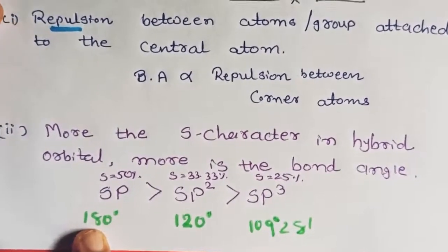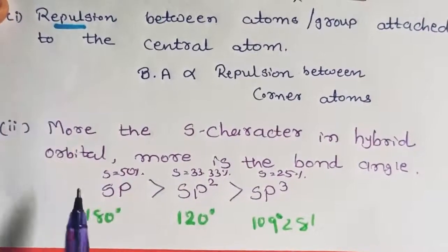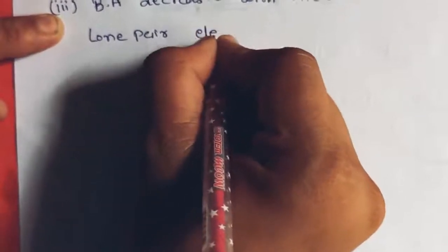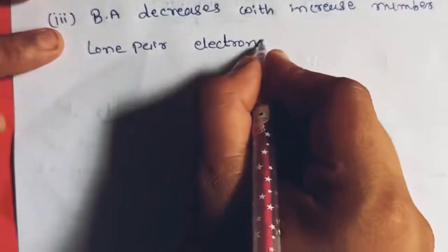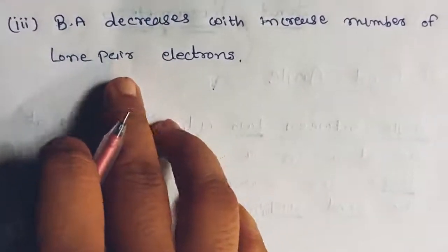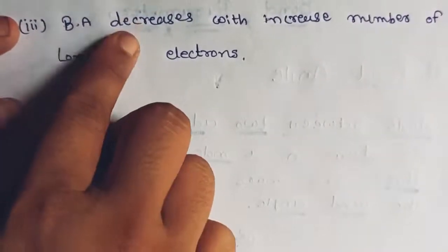The third factor is lone pair electrons. Bond angle decreases with increase in the number of lone pair electrons. Of all the valence electrons, those that participate in bonding are called bond pair electrons, and those that do not participate in bonding are called lone pair electrons. As lone pair electrons increase, bond angle decreases.